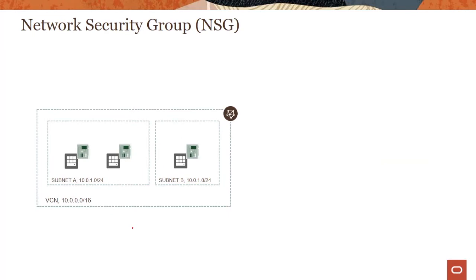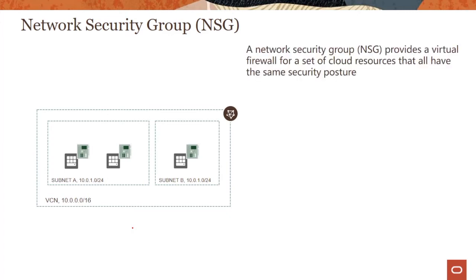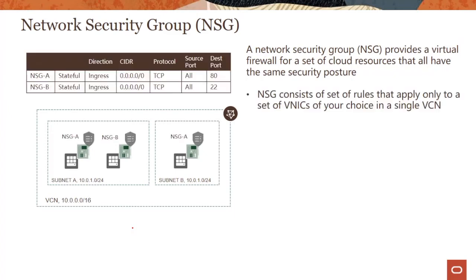Now let's talk about another security mechanism called network security group, or NSG. NSG provides a virtual firewall — like a security list — for a set of cloud resources that all have the same security posture. NSG consists of a set of rules that apply only to a set of virtual network interface cards (VNICs) of your choice in a single VCN. As you can see in the diagram, there's a VNIC per instance, and different instances can belong to different NSGs.